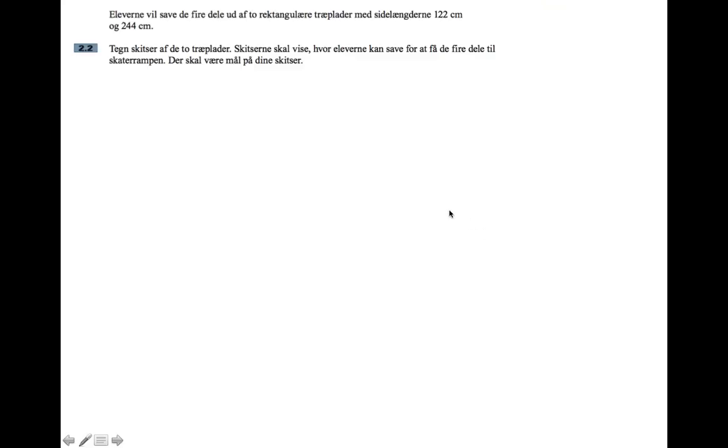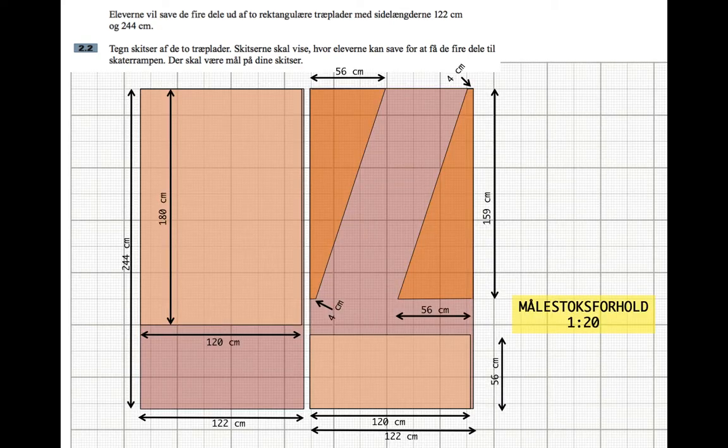Next question: the pupils want to saw the four parts out of two rectangular pieces of wood with side lengths 122 centimeters and 244 centimeters. Draw sketches of the two pieces. The sketches have to show how the pupils can saw in order to get the four parts for the skater ramp. There should be measurements on your sketches.